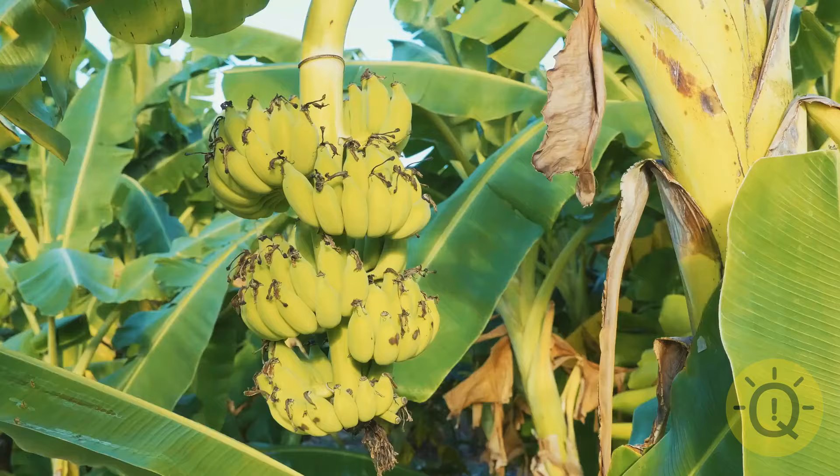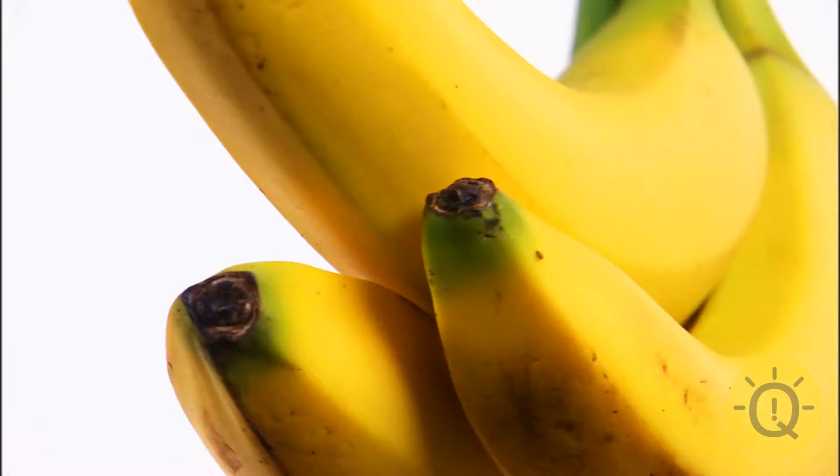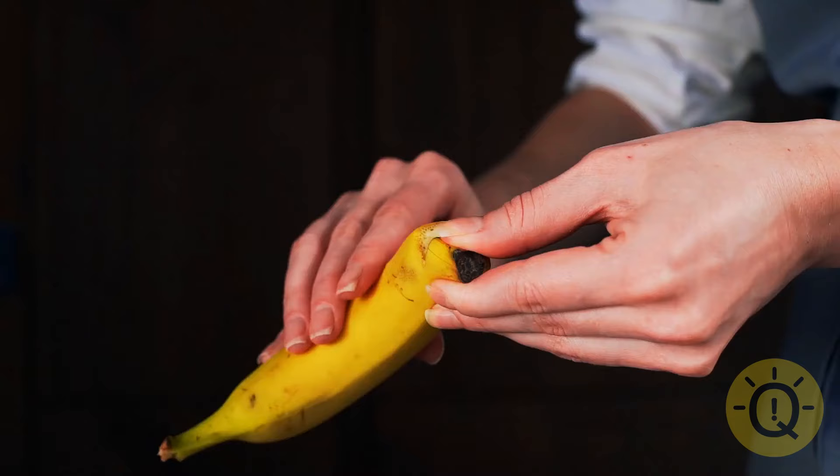Bananas grow upside down. True. Bananas grow naturally towards the sun as they're getting larger. That's why there's a curve. So does that mean we've been peeling them the wrong way this whole time? Maybe.